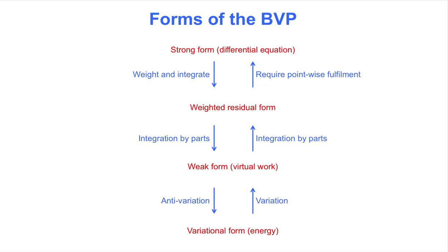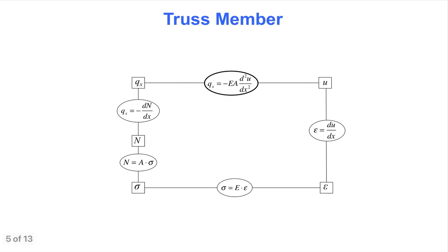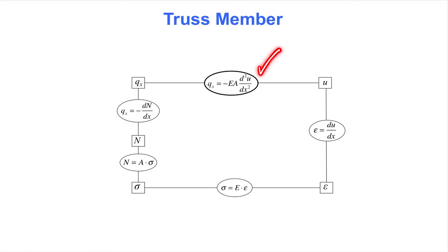The next slide shows the ingredients of the boundary value problem for truss elements, derived in the short course on structural members posted at Tier Yes Toolbox. The figure matches the pattern shown earlier, with kinematic compatibility on the right-hand side. Notice the differential equation that appears when we combine all the ingredients. It is that equation that forms the starting point for the derivation of the other forms of the boundary value problem on the next slide.